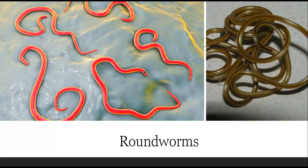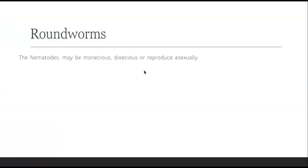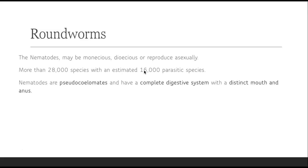That's all we need to talk about with the flatworms. Let's get into the roundworms, a little bit more complex. The nematodes are the roundworms. They might be monoecious, meaning they are hermaphrodites, or dioecious, having a male and a female. If they're dioecious, they will have to reproduce sexually, or they could also reproduce asexually. There are more than 28,000 species, with an estimated 16,000 of them being parasites. Nematodes are pseudocoelomates, which means they have a pseudocoelom — a pseudo body cavity. And they have a complete digestive system, meaning they have a mouth and an anus.